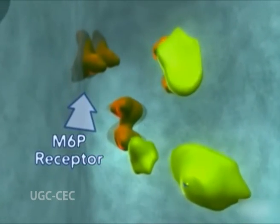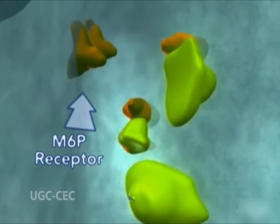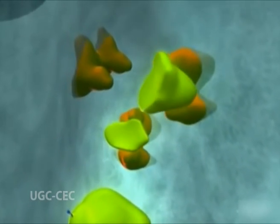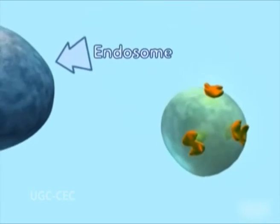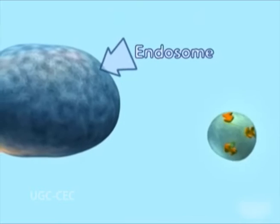Because of this modification, these mannose residues are not removed during further processing. Instead, these phosphorylated mannose residues are specifically recognized by a mannose-6-phosphate receptor in the trans-Golgi network, which directs the transport of these proteins to lysosomes. The phosphorylation of mannose residues is thus a critical step in sorting lysosomal proteins to their correct intracellular destinations.